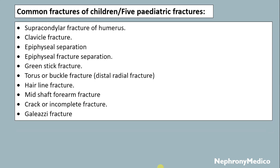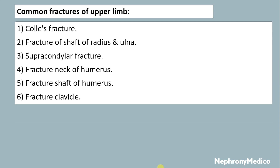Common fractures seen in children: supracondylar fracture of humerus, clavicle fracture, physeal separation, characteristic fractures — torus or buckle fracture, hairline fracture, mid-shaft fracture, greenstick fracture, incomplete fracture, and Galeazzi fracture.